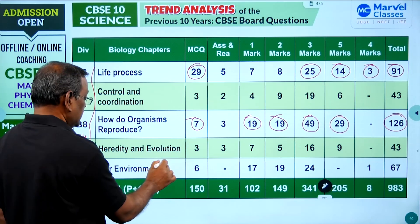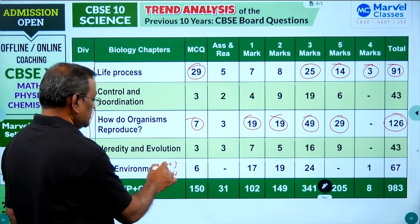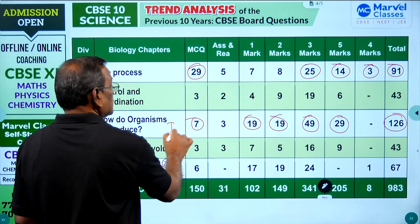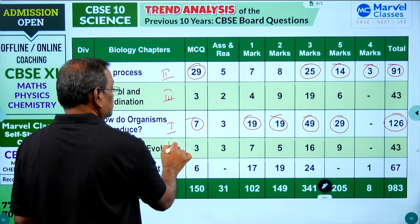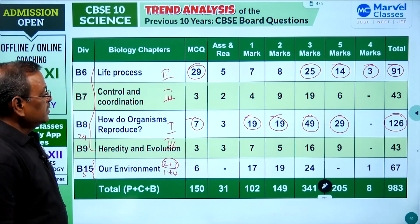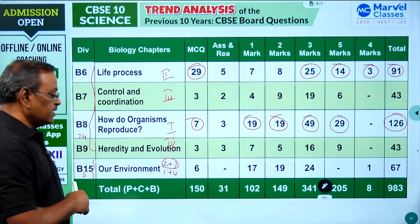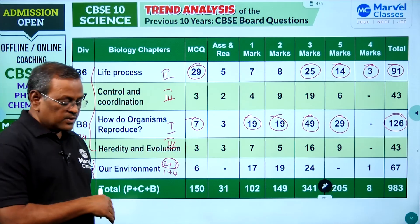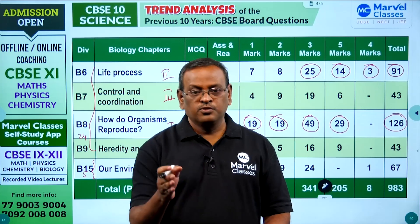The next important chapter is Our Environment, which has a separate weightage — you will get either 2 plus 3 or 1 plus 4 marks, where the 4-mark question may be a case study. The preparation order for biology is: first How Do Organisms Reproduce, second Life Processes, third the next chapter, and fourth Our Environment, where you can expect 5 marks as 2 plus 3 or 1 plus 4.